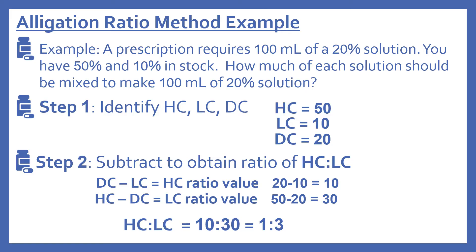Now we're going to subtract to obtain the ratio of HC to LC. DC minus LC: 20 minus 10 gives us 10. And then HC minus DC gives us the LC ratio value: 50 minus 20 equals 30. So our HC to LC ratio will be 10 to 30, or you can reduce that to 1 to 3. You don't have to reduce it, but I reduced it to keep the numbers more simple.